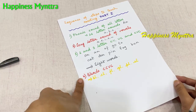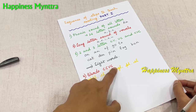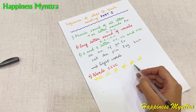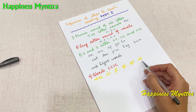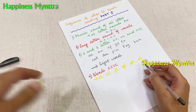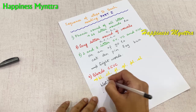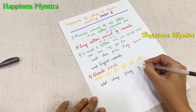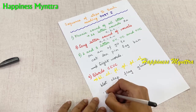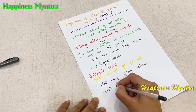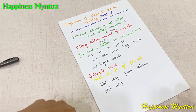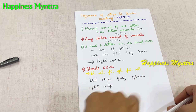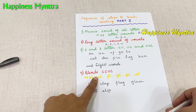Then we move on to the blends. Initially I prefer doing the CCVC blends, which means the L-blend family: BL, CL, FL, GL, PL, and SL. So the words that come in would be something like 'Blot,' 'Clap,' 'Flag,' 'Glum,' 'Plot,' 'Slip,' and many more words. This is just a simple representation, but all possible words with these CV blends with the L should be covered.